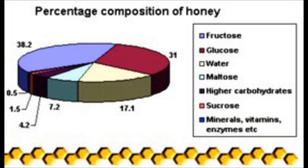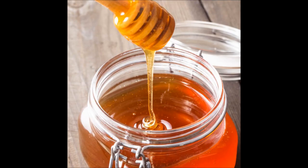Besides that, honey contains about 180 types of different compounds including water, sugars, free amino acids, proteins, enzymes, essential minerals, vitamins, and various phytochemicals which are good for skin and body. Studies suggest that some of the factors present in honey are responsible for its antimicrobial activity.